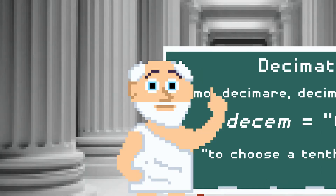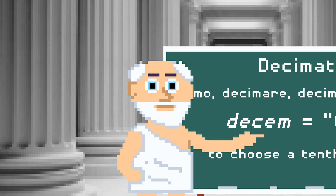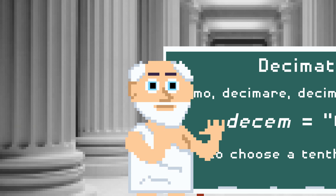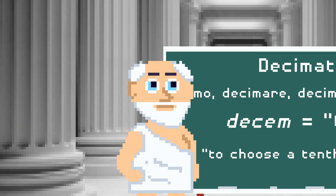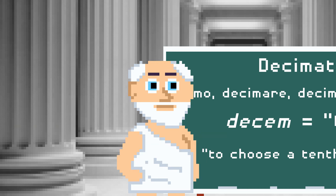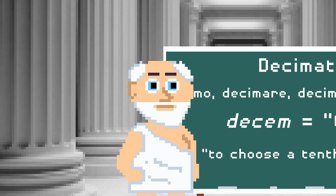Only recently have we started using the word decimate in English as a general synonym for destroy. For the past several hundred years, the word referred specifically to this Roman practice of killing a tenth of a misbehaving group. Grammarians have resisted this new usage, but language changes over time. Ain't nothing to be done about it.